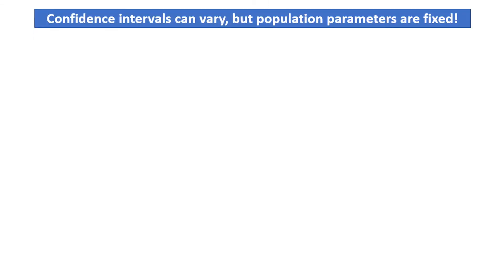It's important to remember that confidence intervals can vary, but population parameters are fixed. A confidence level, such as 90%, is a statement about the confidence interval, not about the population parameter.